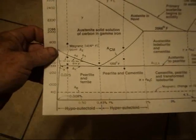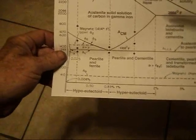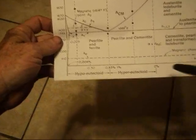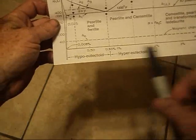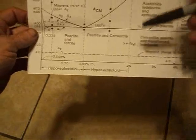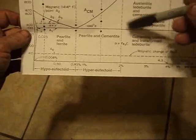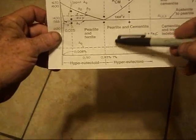This is an iron-carbon phase diagram. It has your temperatures over here and your carbon content down here. Everything past this line is cast iron. Anything over two percent carbon is cast iron. Right here in the very center,